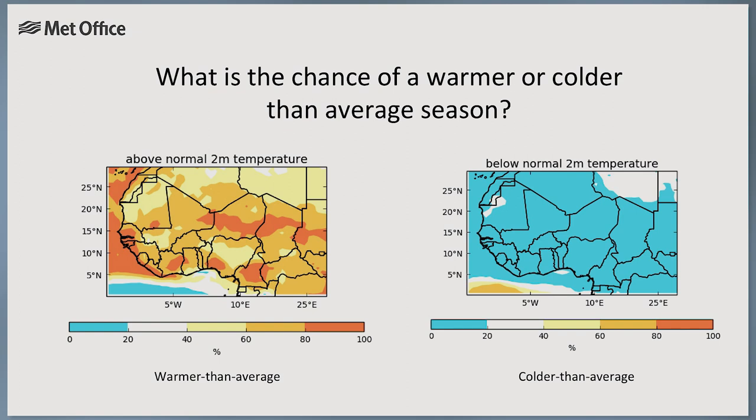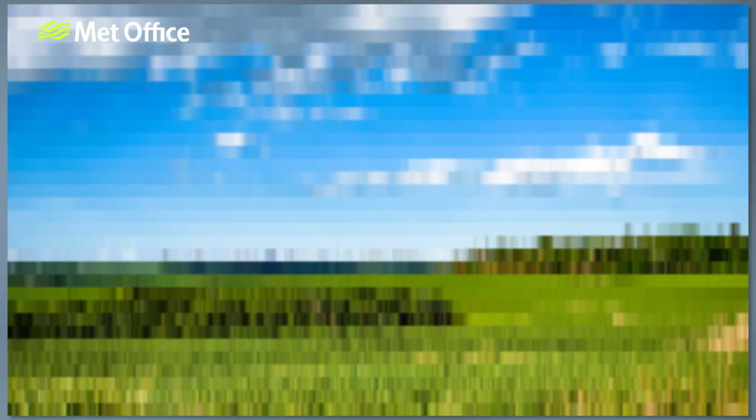You can think of a seasonal forecast as a blurry photograph. You can't quite pick out the details of exactly who's in the picture or where it is, but you still have some information on what the picture is showing.